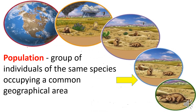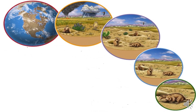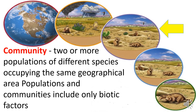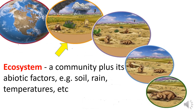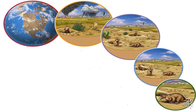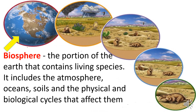A population is a group of individuals of the same species occupying a common geographical area. Populations and communities include only biotic factors. An ecosystem is a community plus its abiotic factors, like soil, rain, temperature, and many more. The biosphere is the portion of the Earth that contains living species; it includes the atmosphere, oceans, soils, and the physical and biological cycles that affect them.